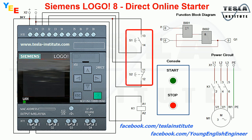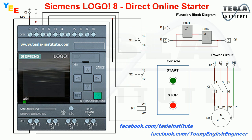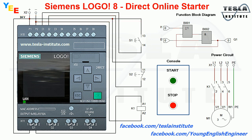In the control circuit we use 2 push buttons. The normally open push button S1 is used to start the motor. This button is connected to the plus of the 24 volt power source and to digital input I1 of the Logo controller.